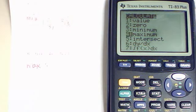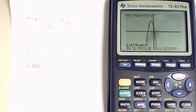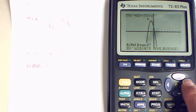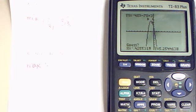Second trace. This time we're going to do a maximum. We still want to go on the left side of our maximum and hit enter. Now on the right and hit enter. Enter one more time.